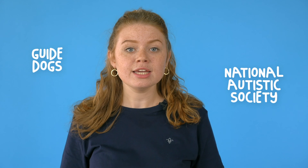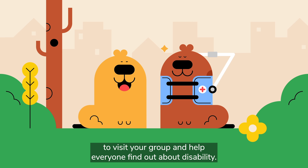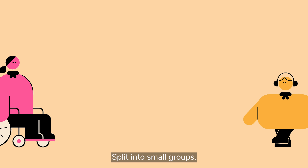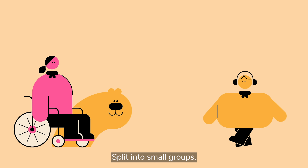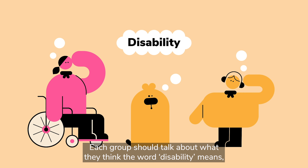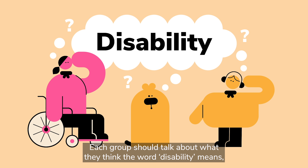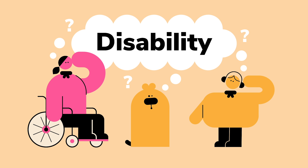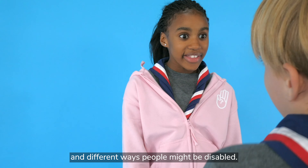If you want to, you could contact an organisation such as the Guide Dogs or National Autistic Society to visit your group and help everyone find out about disability. Split into small groups.